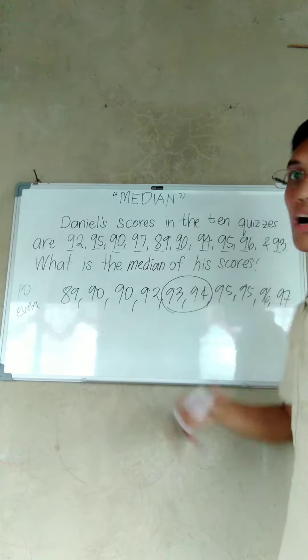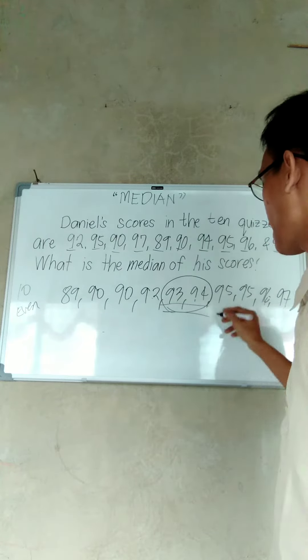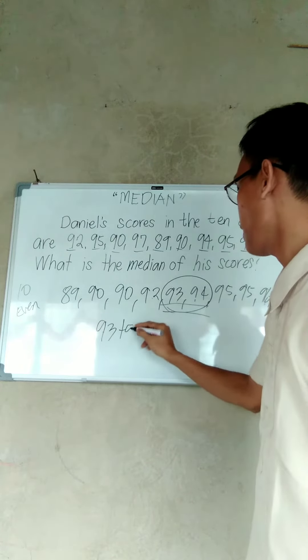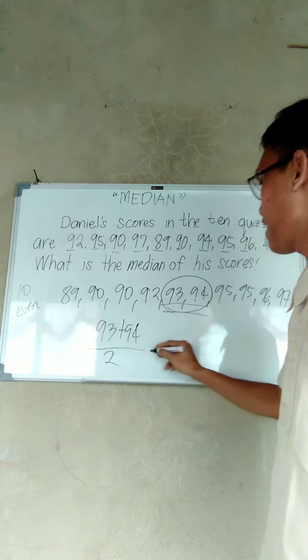Now, are these two our median? No. To find the median, you simply add these two numbers, 93 plus 94, and then divide by 2.